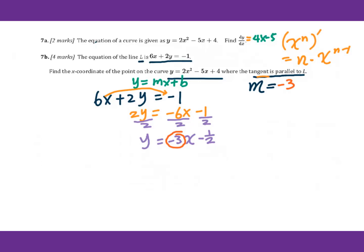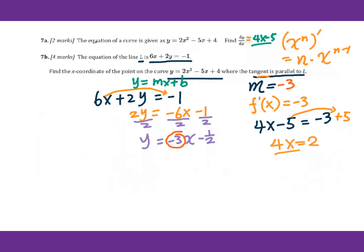Tangent means the derivative. So the derivative of f of x equals negative 3. The derivative is 4x minus 5, which we already figured out. So we set up 4x minus 5 equals negative 3. Then add 5 to both sides: 4x equals 2. Divide by 4 both sides: x equals 1 over 2. That's the answer — the x coordinate of the point is x equals one half.